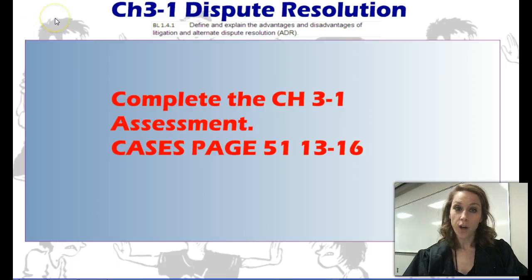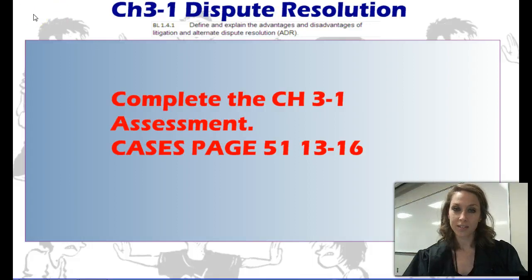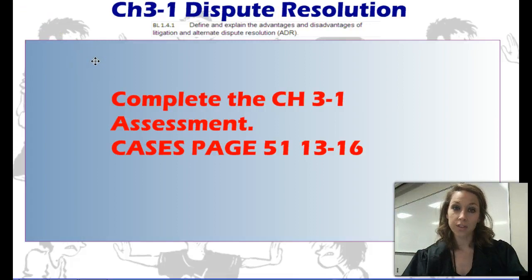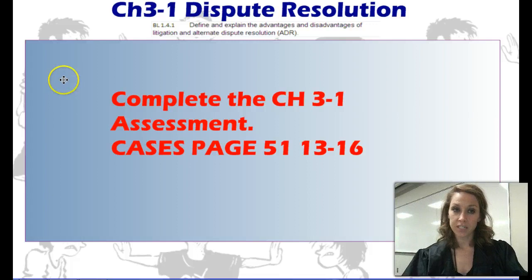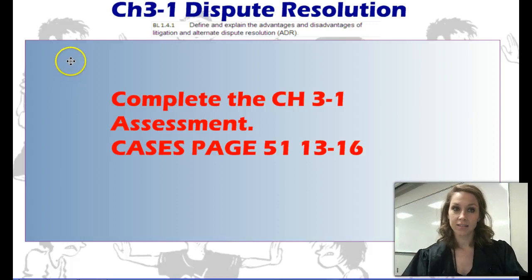Which of the following would be involved in an appellate court: juries, judges, or witnesses? If a judge says guilty or not guilty, he just read you the verdict or the judgment — which one? If a judge at the appellate level upholds the decision of the lower court, what has he done?